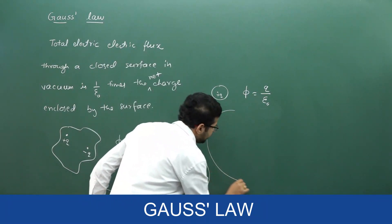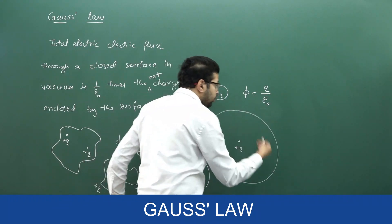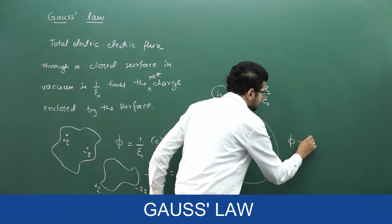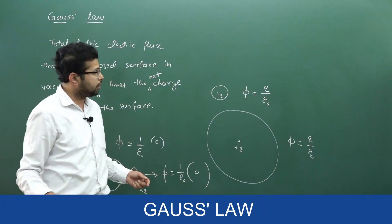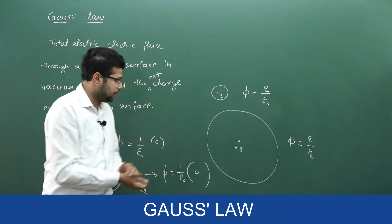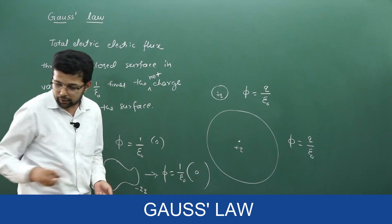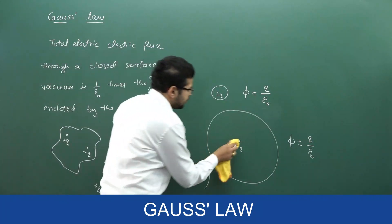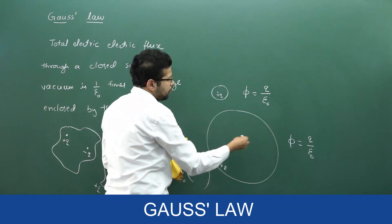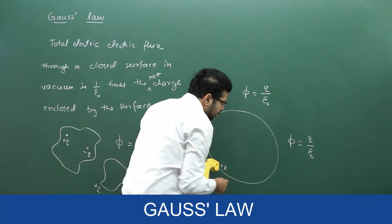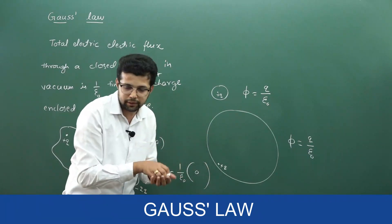If I increase the size of the closed surface, the charge enclosed is still plus q, so the flux is still q by epsilon naught only. This means the flux through the surface is independent of the size, and it is also independent of the shape of the closed surface. Furthermore, even if you keep this positive charge somewhere off-center inside, the flux is the same. Where the charge is inside the closed surface is not important — the only thing is it should be enclosed by the surface.